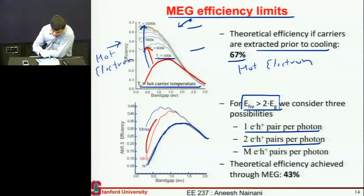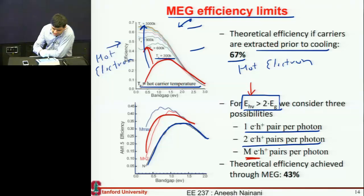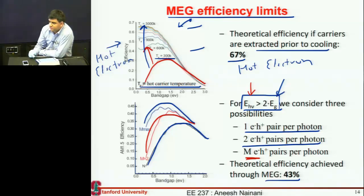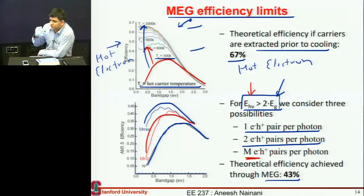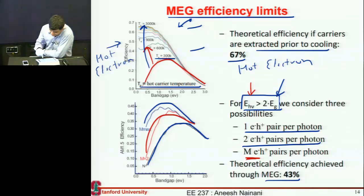If you can generate the maximum number of electron-hole pairs possible from high energy photons, it gives you the top efficiency curve. You could use the same code from problem set one, configured so that each photon with energy greater than twice the band gap generates two electron-hole pairs, photons with energy more than three times the band gap generate three, and so on. If you run that code, you get the efficiency of multi-exciton cells to be around 43 percent.